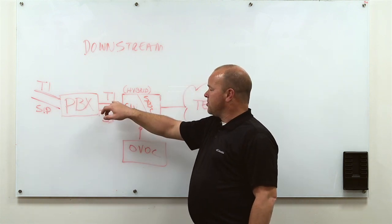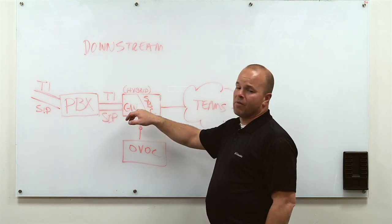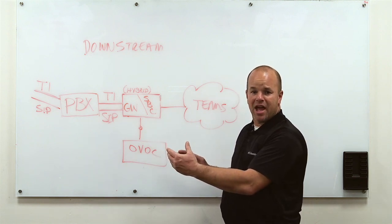Coming across that, usually what a lot of customers will do or have done in the past is have a T1 tie line coming into a gateway. Talking with the direct routing piece of Teams, we're going to need an SBC in order to make that happen.